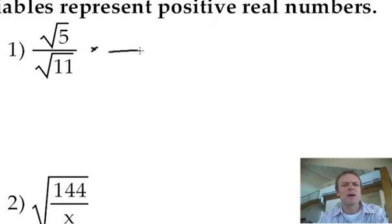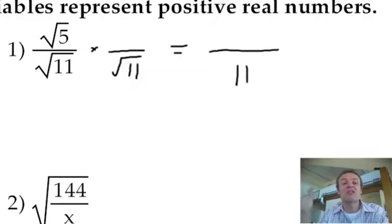I multiply it by another root 11. Now you can keep on running with this. That equals, of course, 11. I've just rationalized the denominator. It's just an 11 now because I multiply by another root 11.